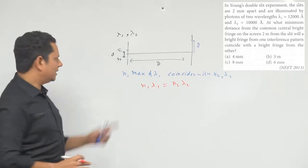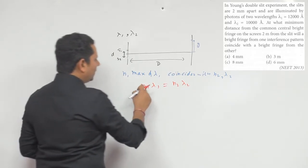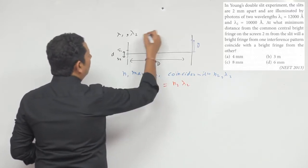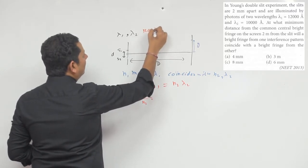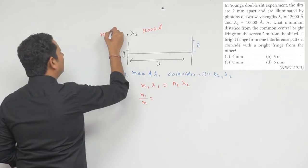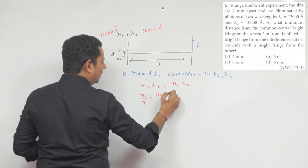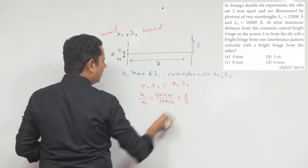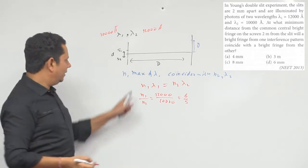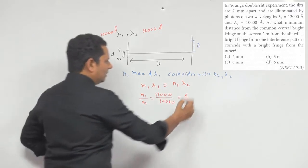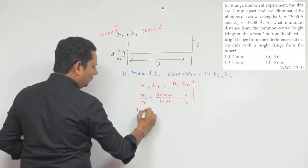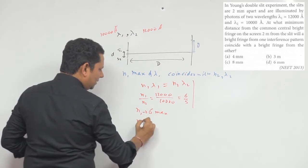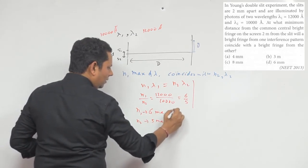Using the formula, n1 and n2 are unknown. We can write n1 divided by n2 equals lambda 2 divided by lambda 1, which is 12,000 divided by 10,000, giving us 6 by 5. Taking the minimum values, n1 equals 6 and n2 equals 5.